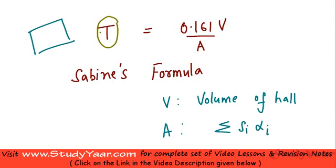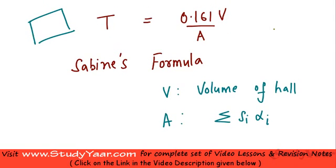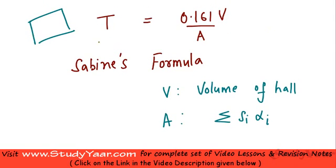The reverberation time in a hall whose volume is V and whose total absorption is given by A. In this formula, the reverberation time is directly proportional to the physical volume of your hall.